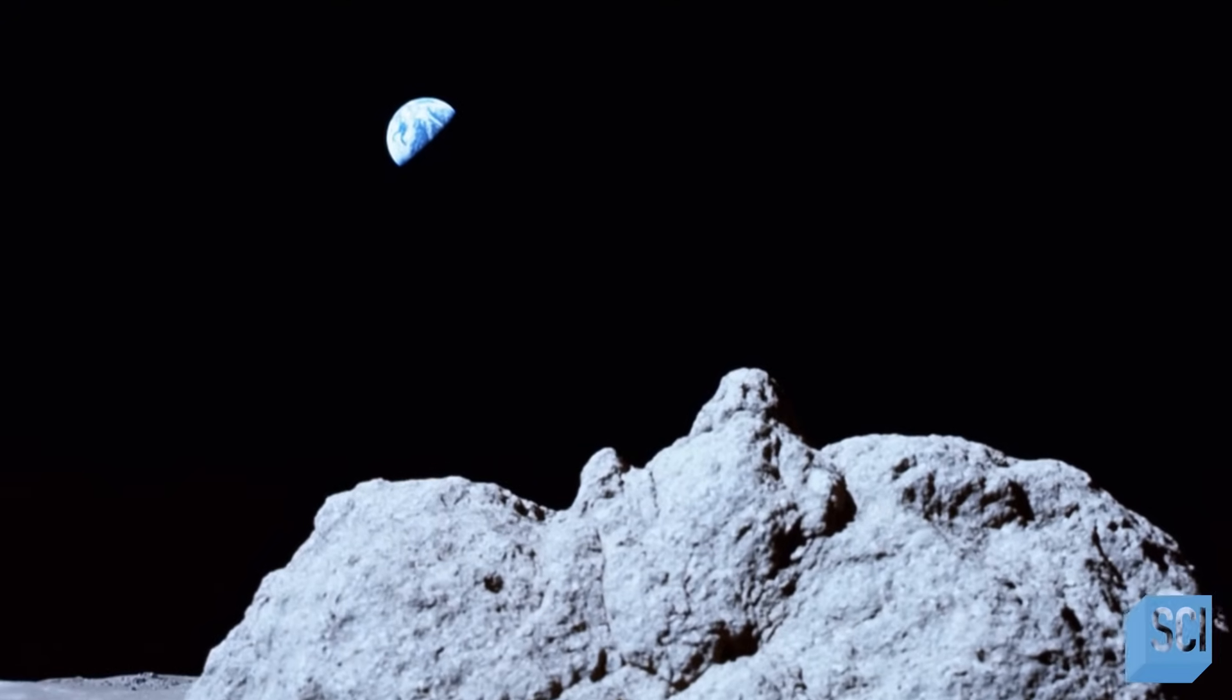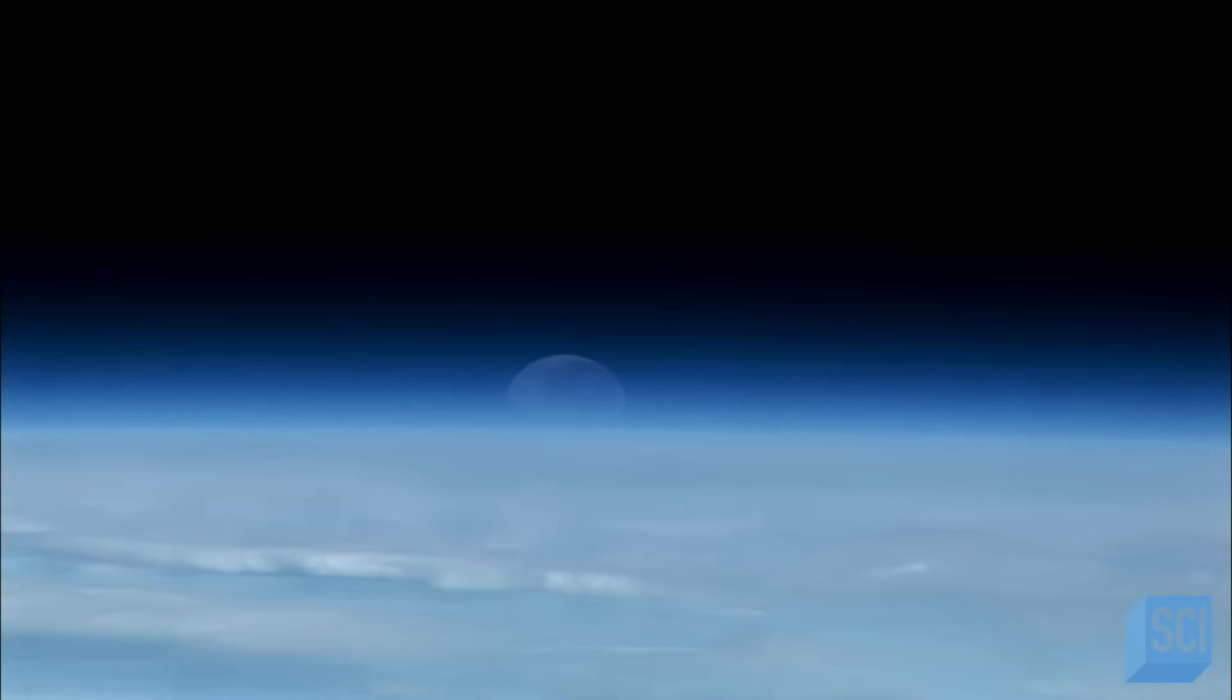But how is the moon made of such similar stuff as the Earth? When we look at other moons, they're not made of the same materials as their planets. And so something different happened here to make our moon and its distinct characteristics.